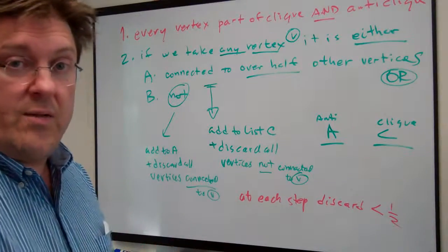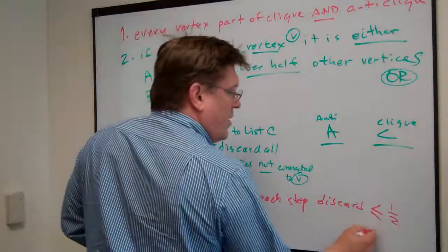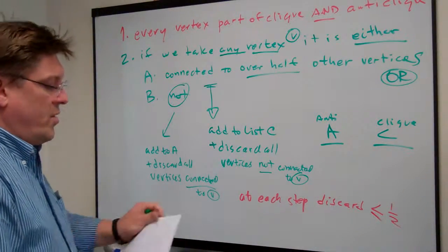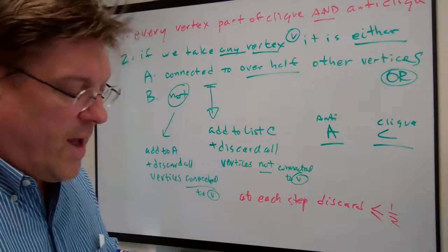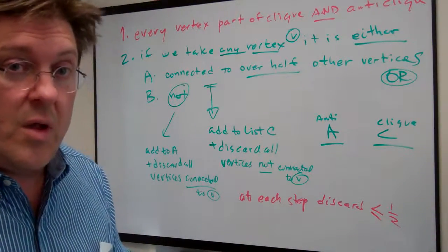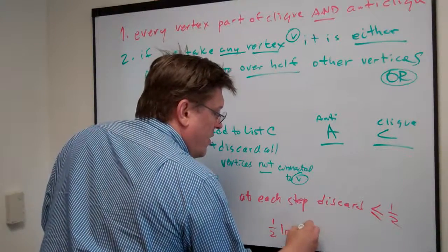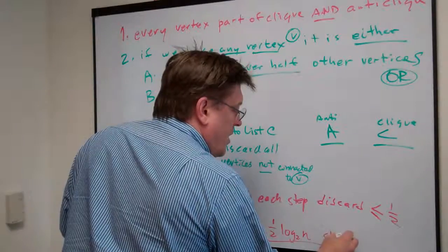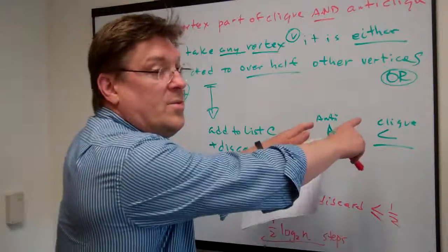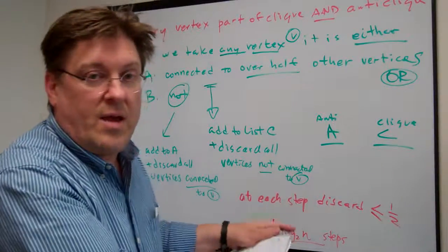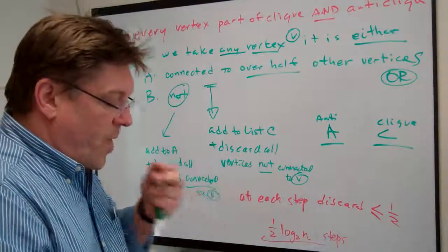That goes back to the discussion about log base 2: we're discarding at most half at each step, no more. So if we go through this process step by step, we'll have at most log n steps total. Since we have two lists, that's one-half log n per list — and one of those two lists must have at least one-half log n entries.